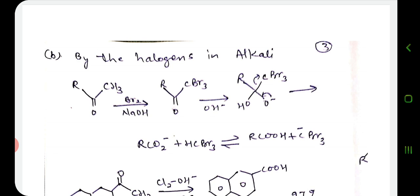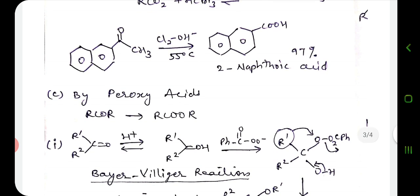This provides a particularly useful method for the synthesis of aromatic acids from the corresponding methyl ketones, which are often readily available through the Friedel-Crafts reaction. For example, acetylation of naphthalene in nitrobenzene solution gives 2-acetylnaphthalene, which yields 2-naphthalene acid on oxidation with chlorine in sodium hydroxide solution at 55 degrees centigrade, giving 97% of 2-naphthalene acid.